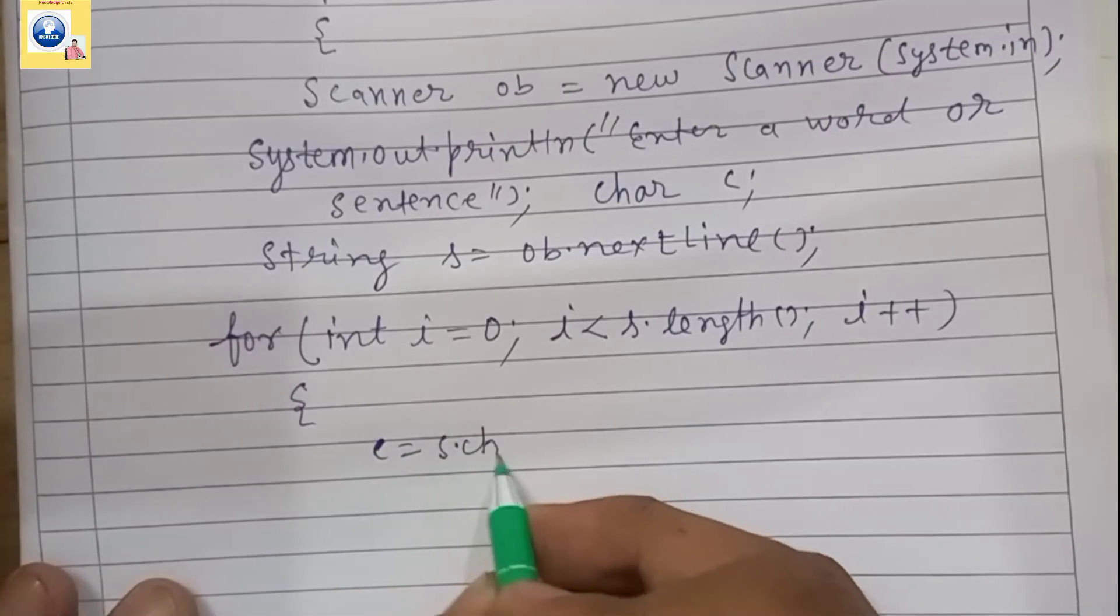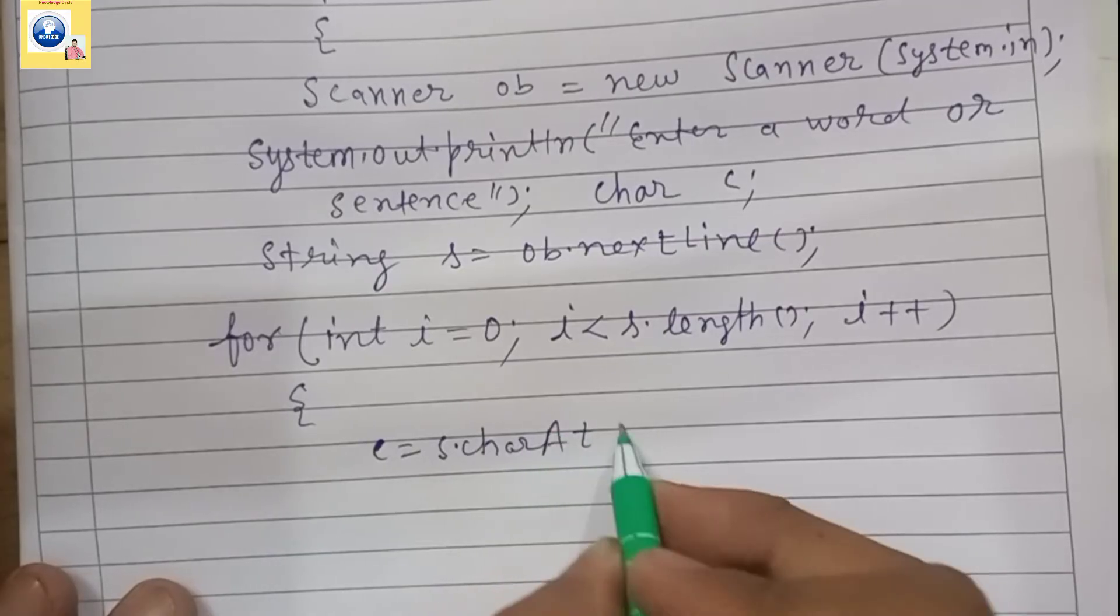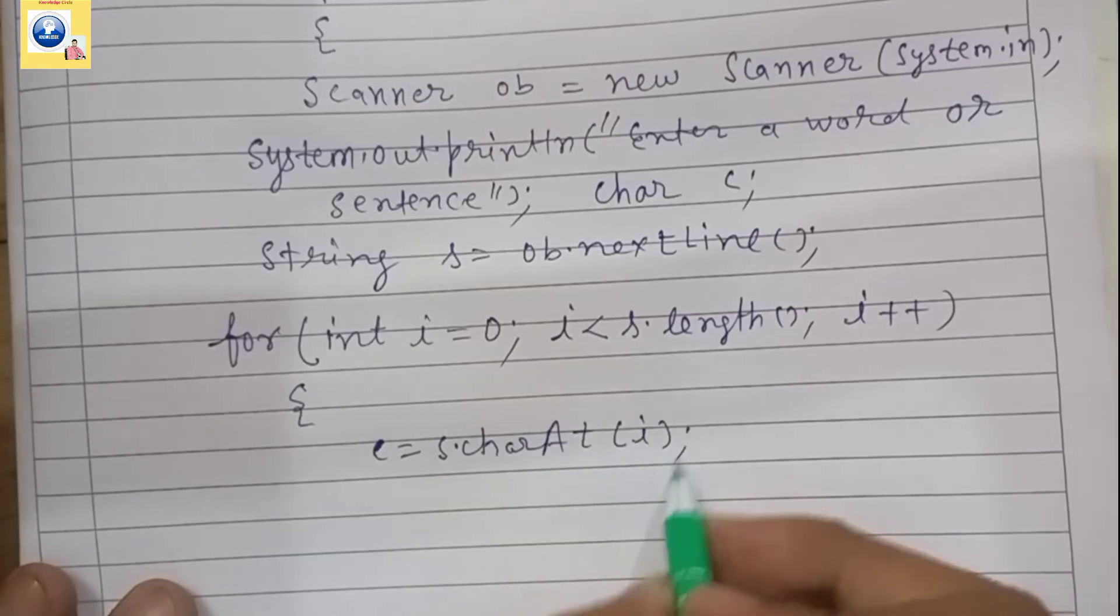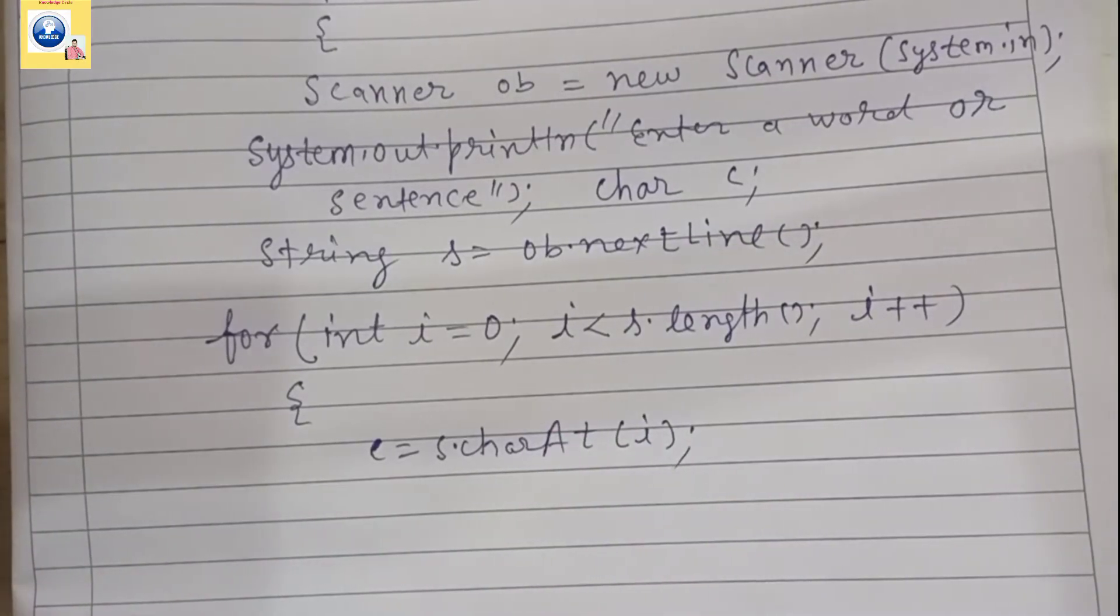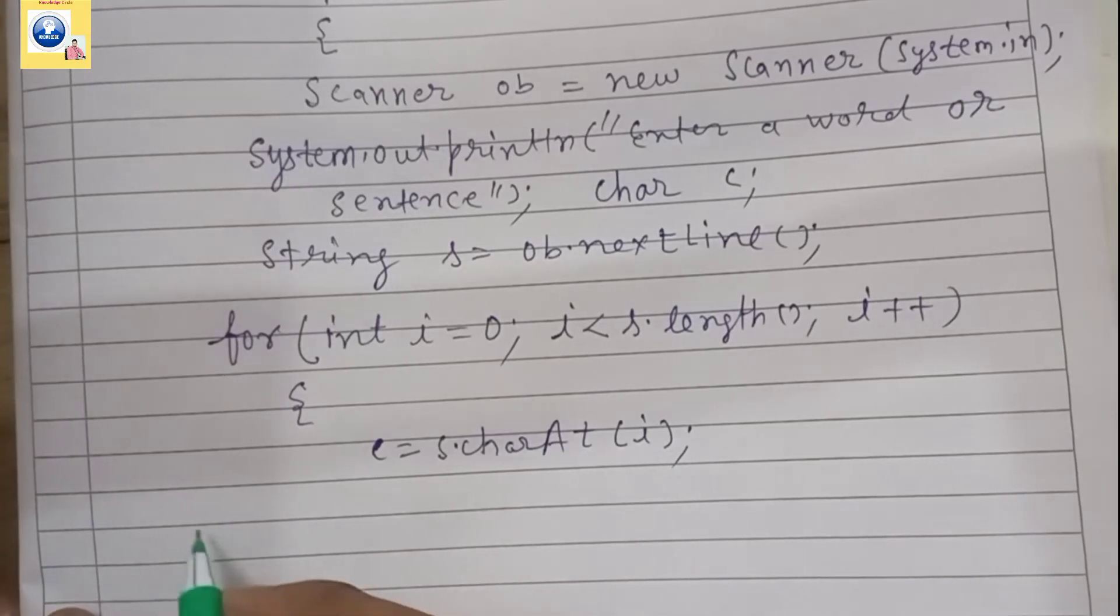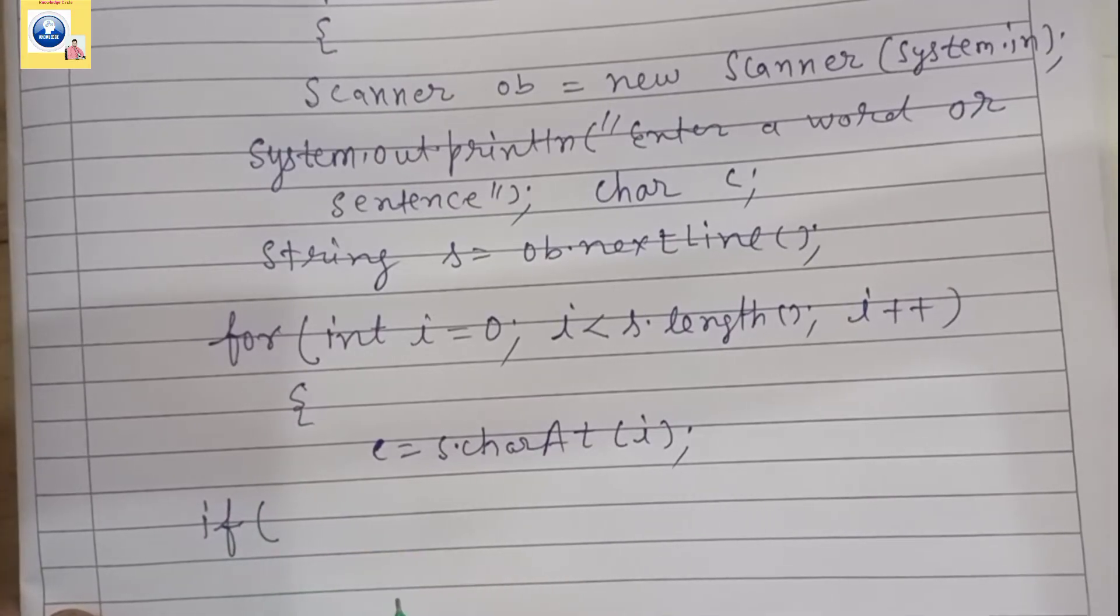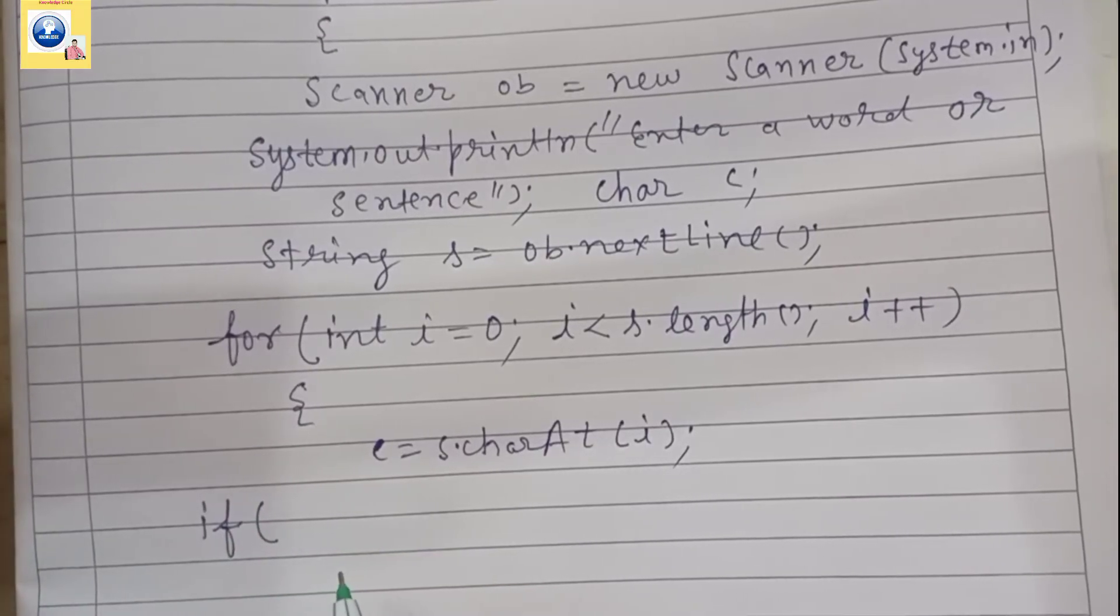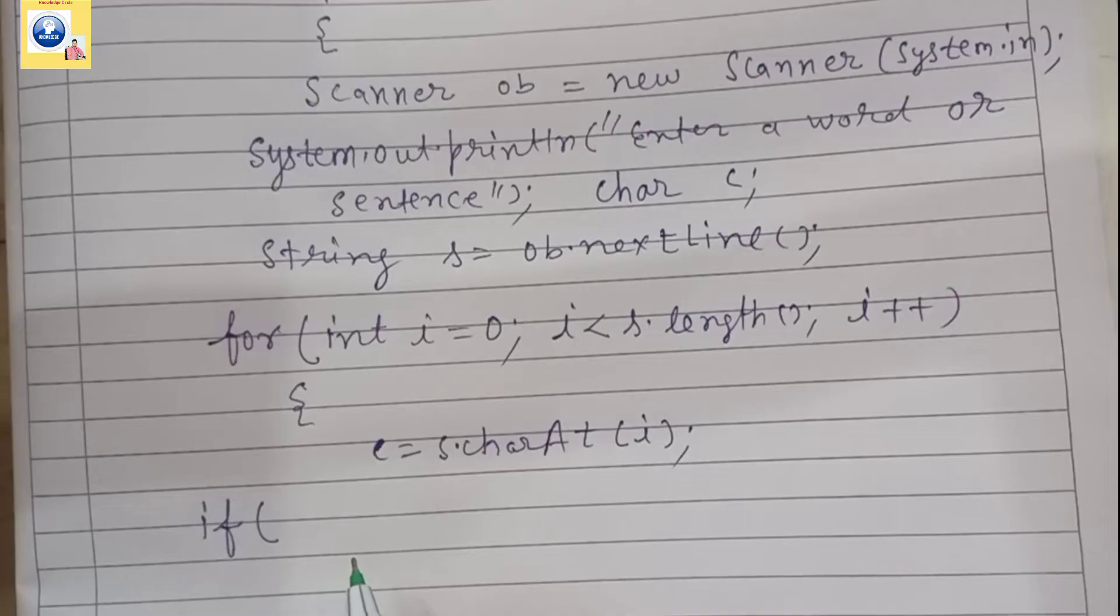I will declare a variable of character type here, char c. I have declared char c because I need it. So I'll write here c equals s.charAt. charAt is a method to extract a character at a specific position. We have extracted the character and stored in c.